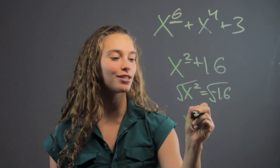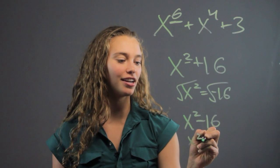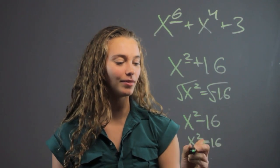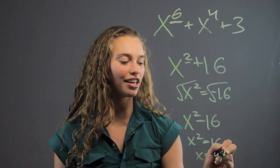But if you have x squared minus 16, that we can factor. We get x squared equals 16. So the two roots are 4 and negative 4.